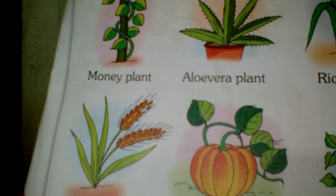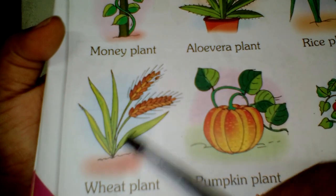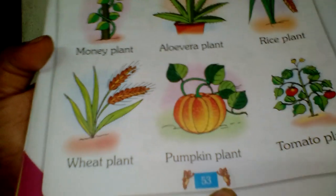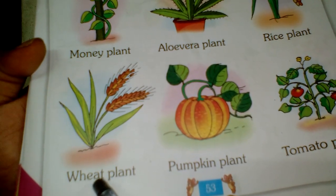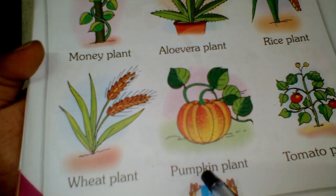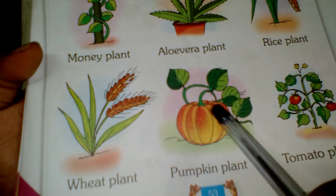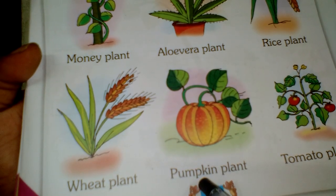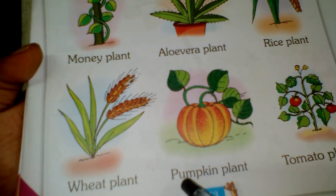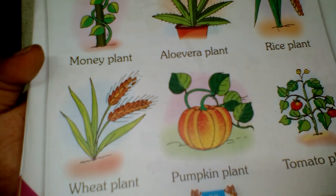This is a wheat plant. You can put wheat plant. It is a wheat plant. It is a pumpkin plant. Pumpkin plant is a pumpkin plant.